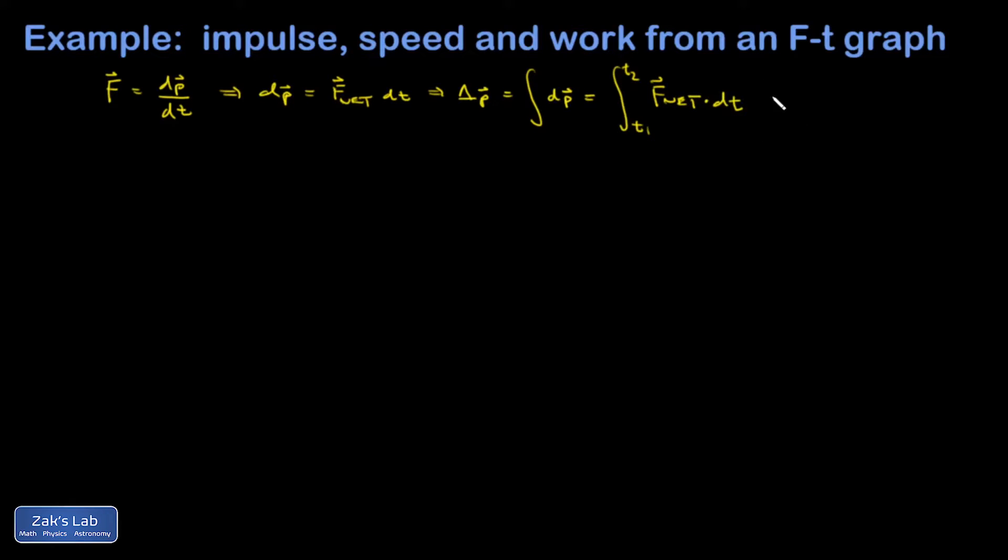Which means if I have a graph of force versus time, the impulse, that's delta p, is given by the area under the curve. So delta p or impulse, delta p equals area bounded by f of t on whatever time interval you're looking at.